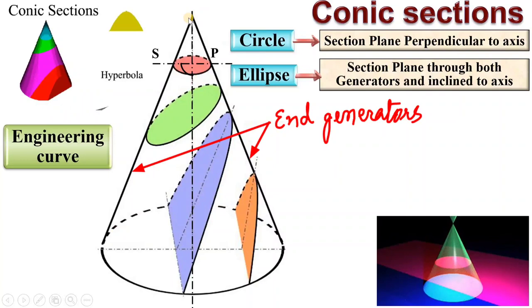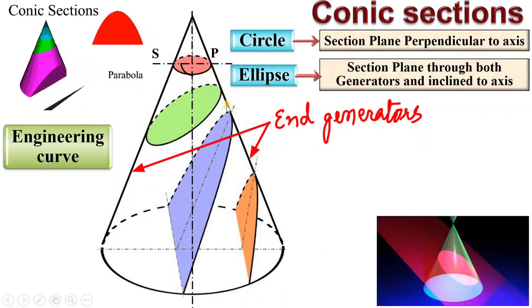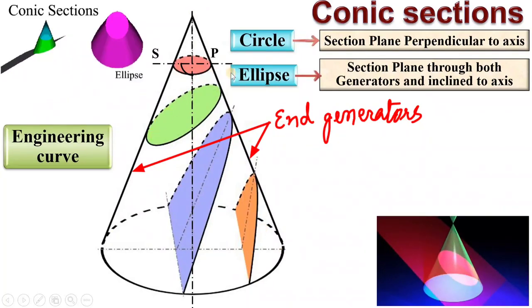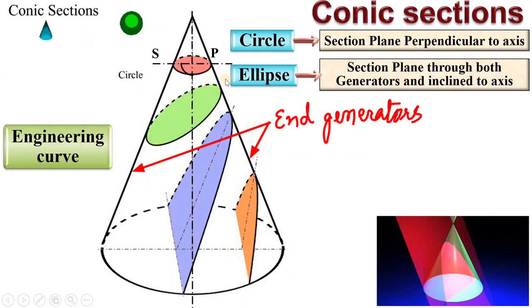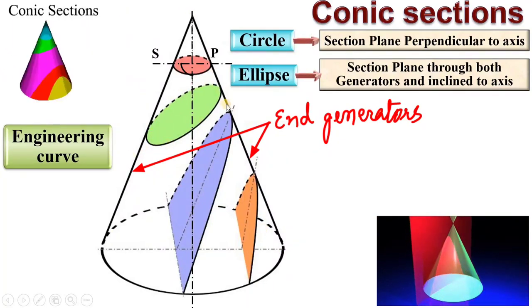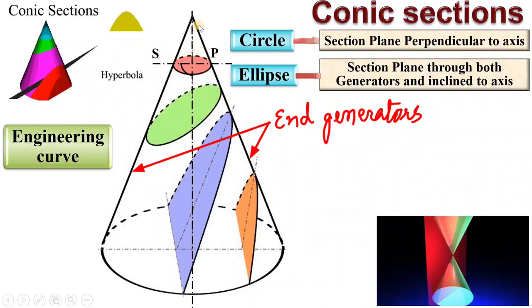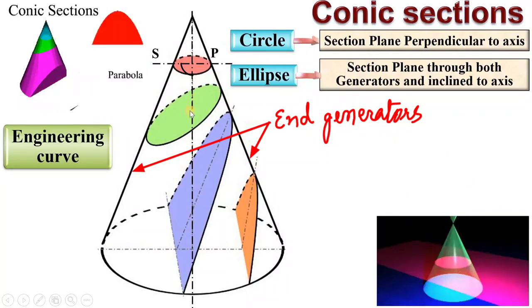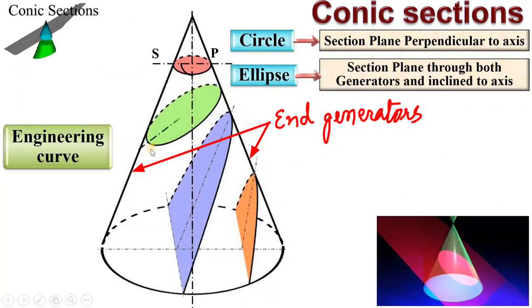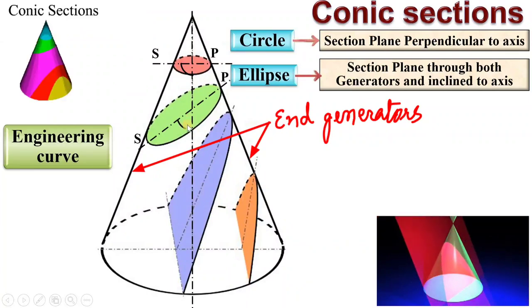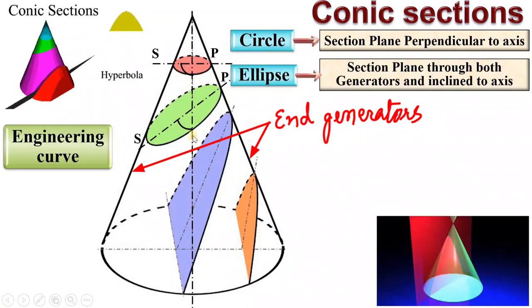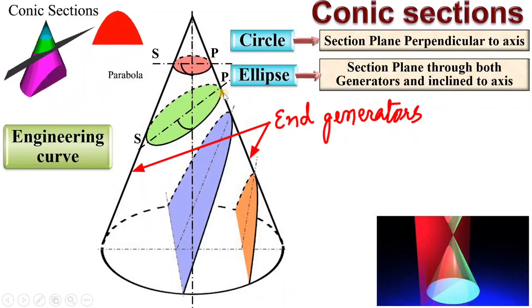These are called generators, so the section plane must be passing through both generators and inclined to the axis of the cone.